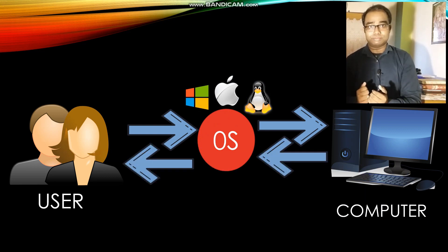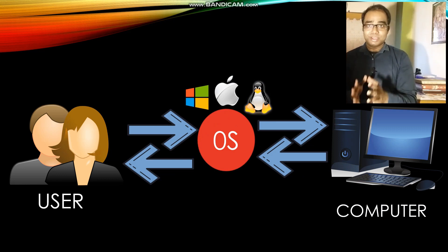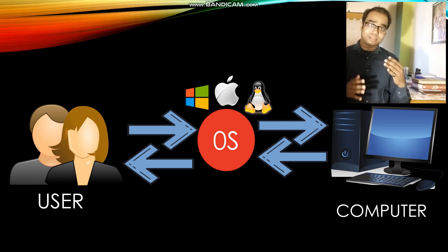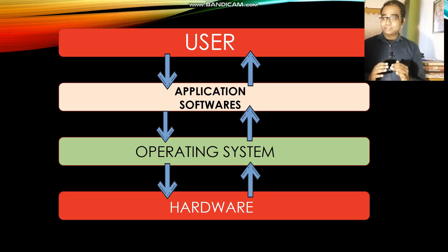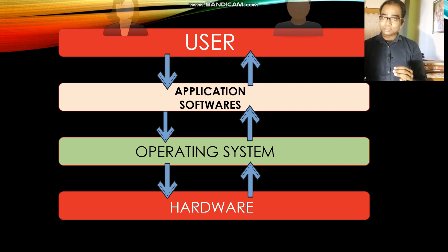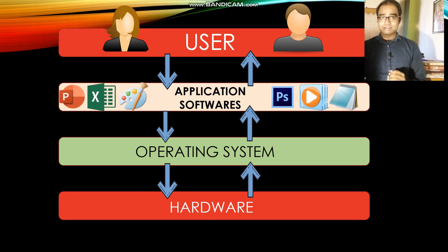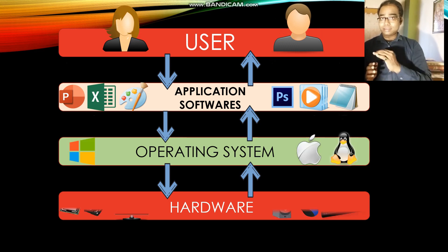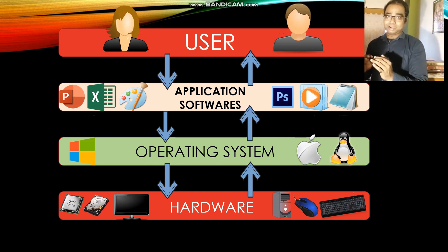And again, if the computer gives a result to the user, the computer also has to give the result through the operating system to the user. From here we can conclude that the operating system is the medium through which the user gives instructions to the computer and the computer gives results to the user. According to the chart, first comes the user, next are the application softwares, then the operating system, and then the hardware.